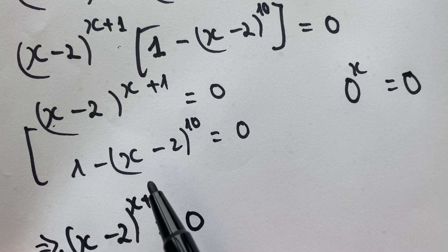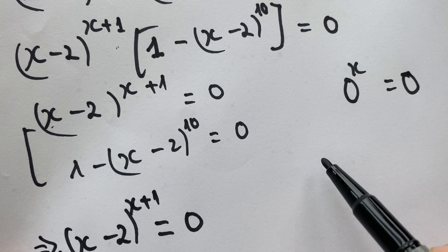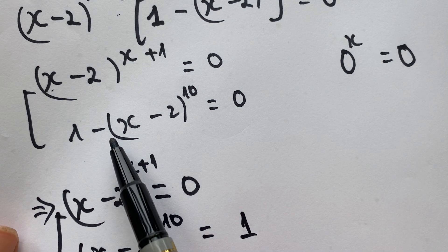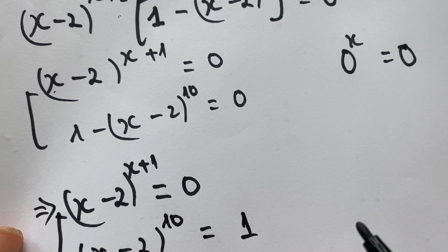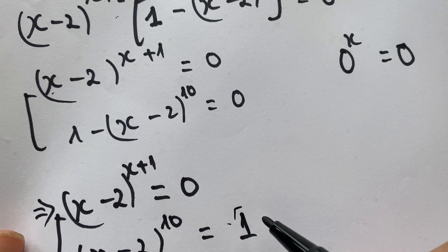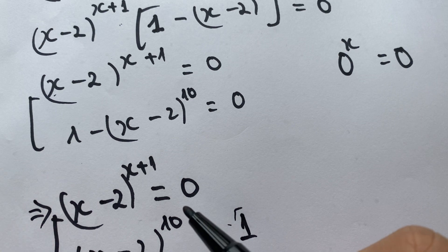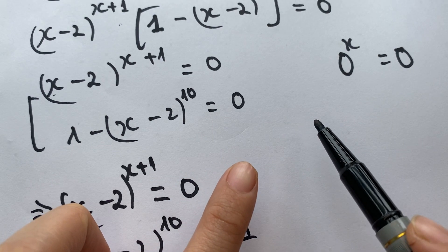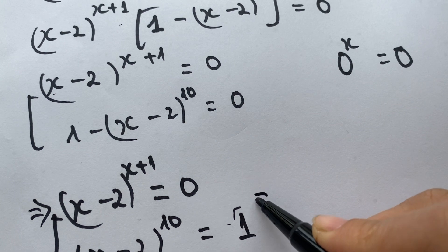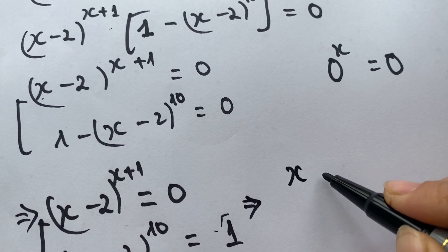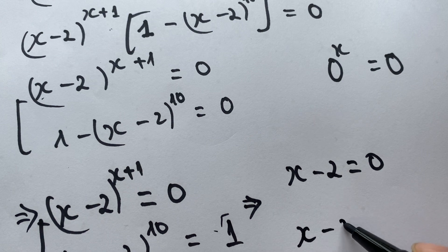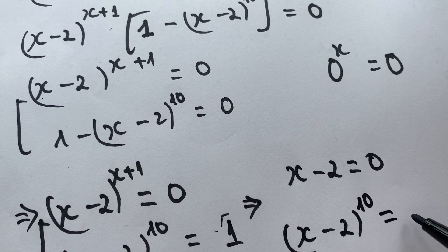We need to move 1 to the right hand side. Therefore, we have (x minus 2) to the power 10 equals 1. When you move 1 to the right side, it becomes minus 1, so you divide both the left hand side and right hand side by minus 1. We get (x minus 2) to the power 10 equals 1.